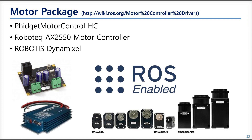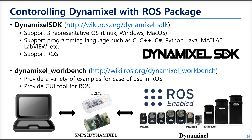Now let's see the package for the motor. This is also described on the ROS Wiki, so see the link above if you are interested. There are three ROS packages for motor control, but we are going to look at the package for Dynamixel. In Dynamixel, there are various price lineups: the AX series, the new X series, and the Pro series, which is over 200 watts.